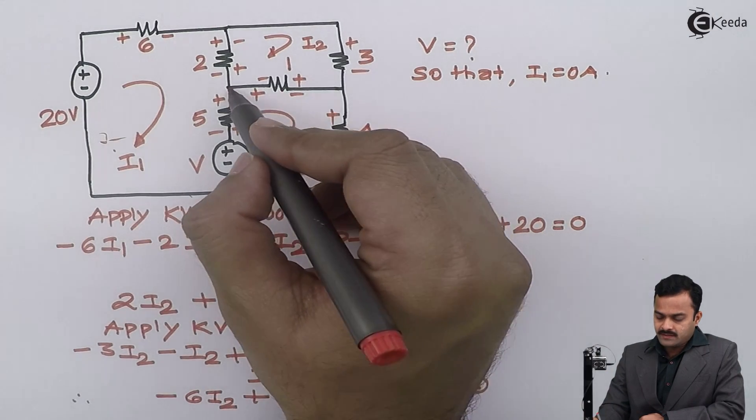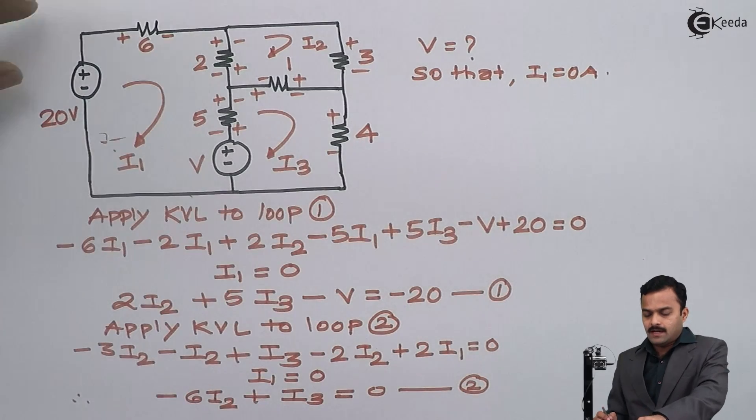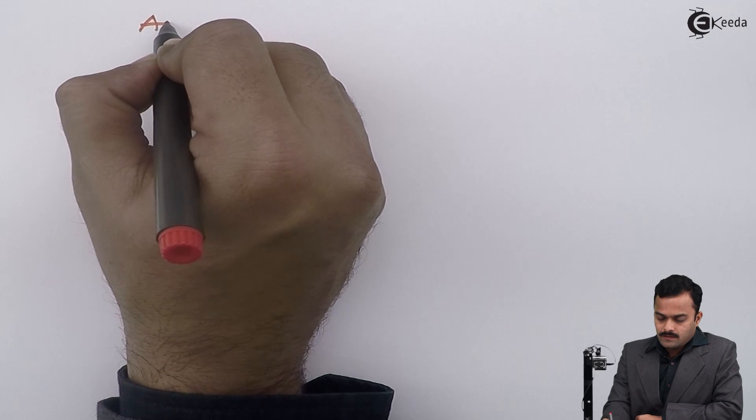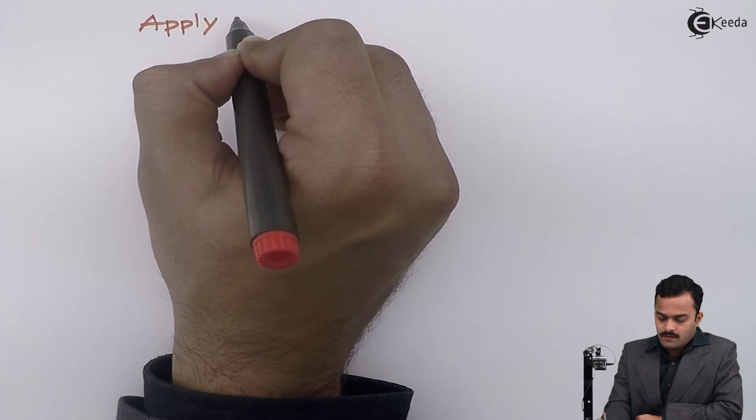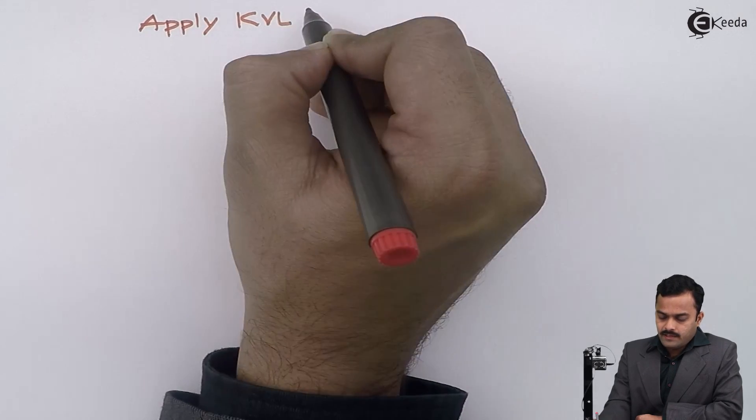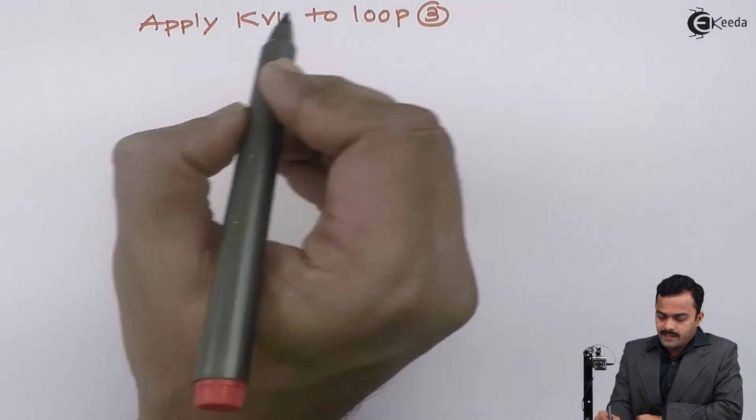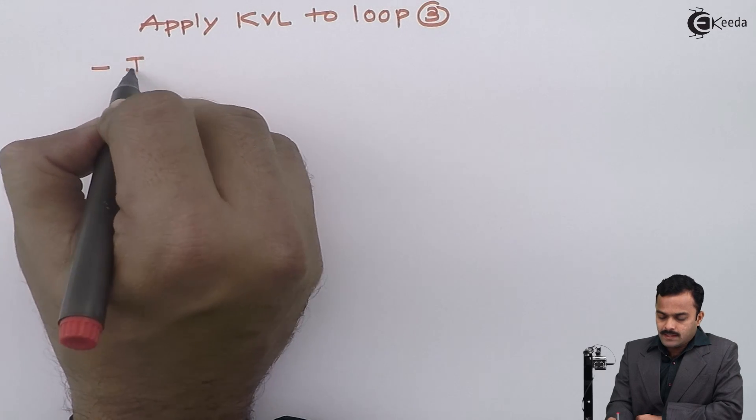for loop 3, I will trace this path and I will get the equation. So here I will write apply KVL to loop number 3, so I will get minus I3.